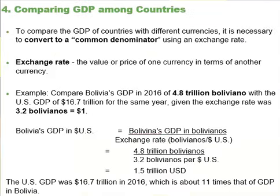It is common to use GDP as a measure of economic welfare or standard of living in a nation. When comparing the GDP of different nations for this purpose, two issues immediately arise. First, we measure a country's GDP in its own currency — the United States uses the US dollar, Canada the Canadian dollar, Mexico the peso, and so on. Thus, comparing GDP between two countries requires converting to a common currency.